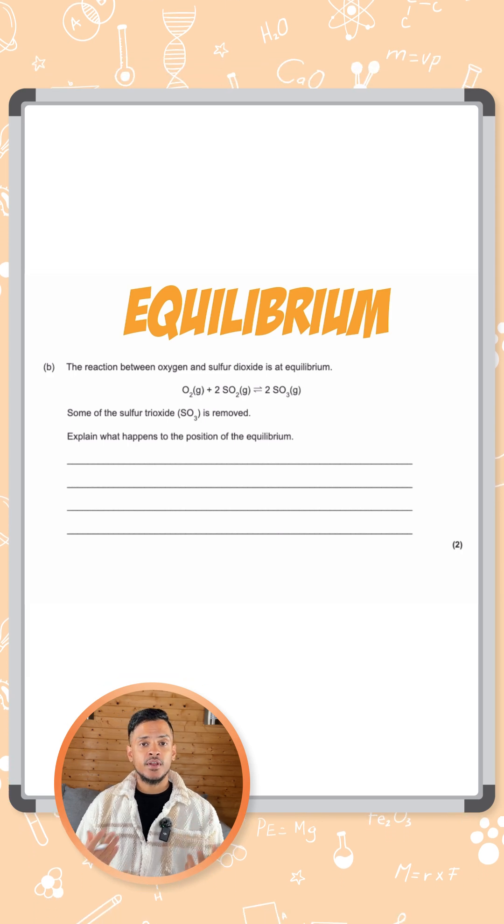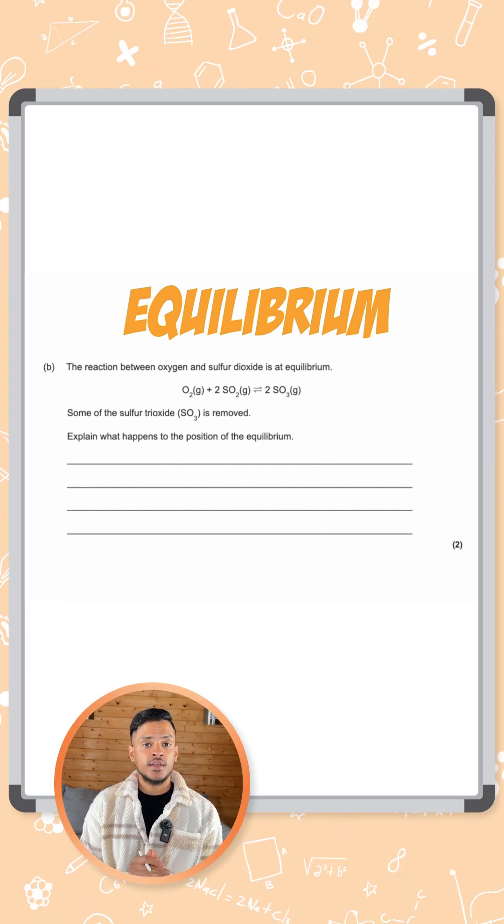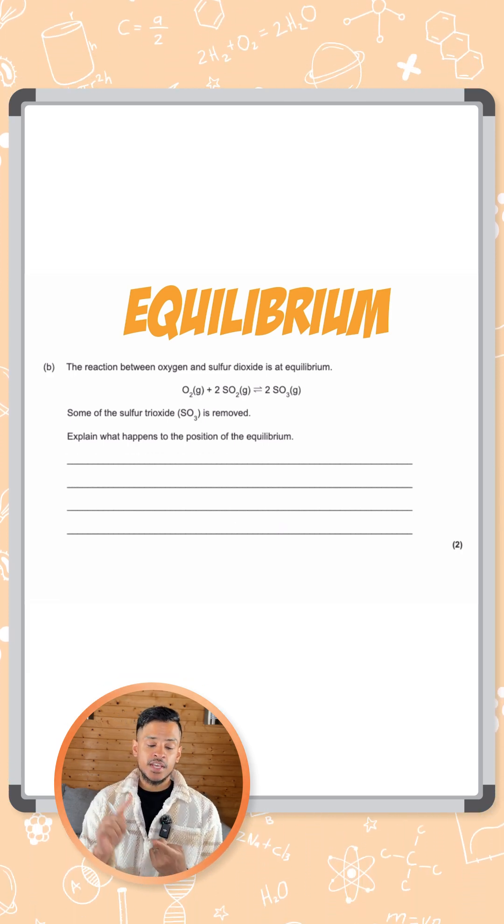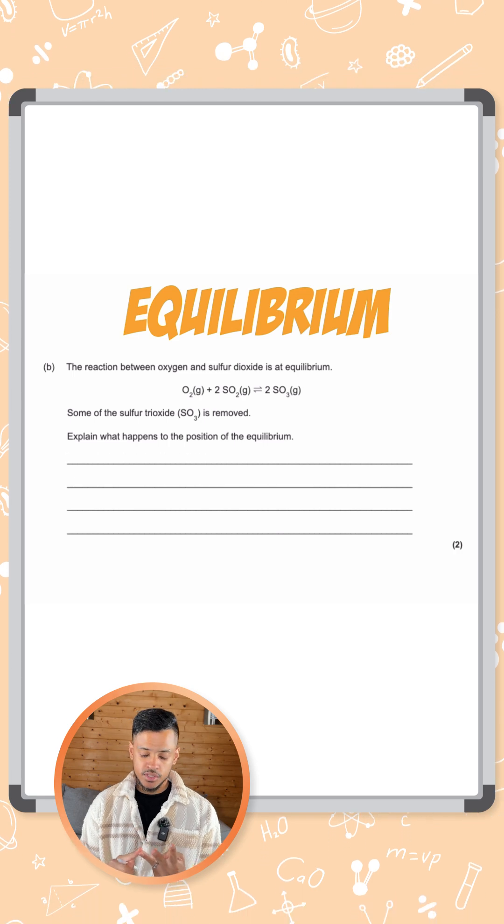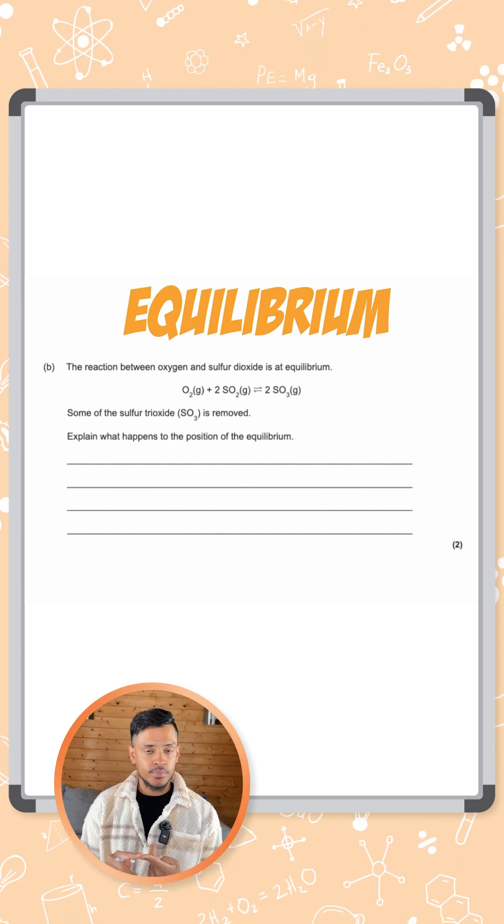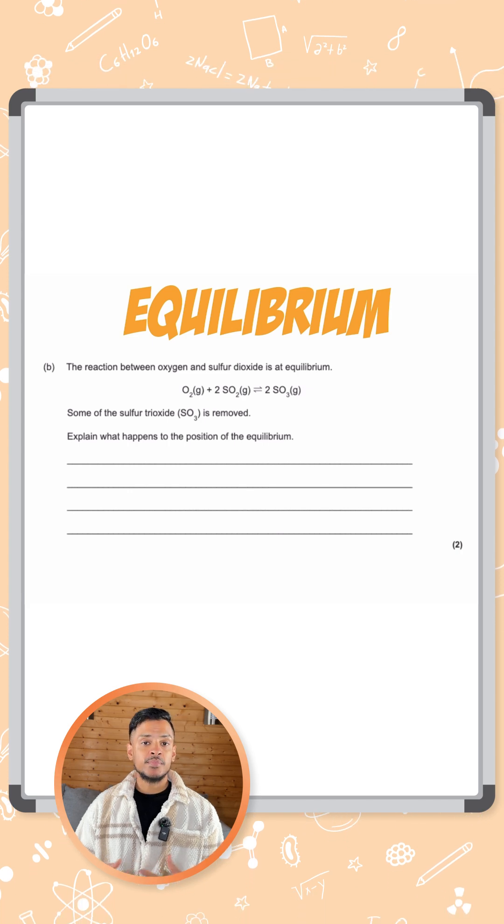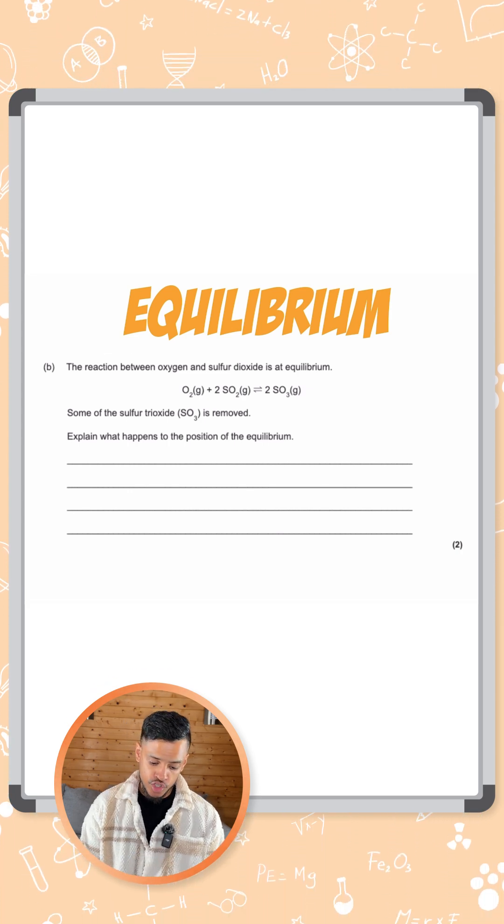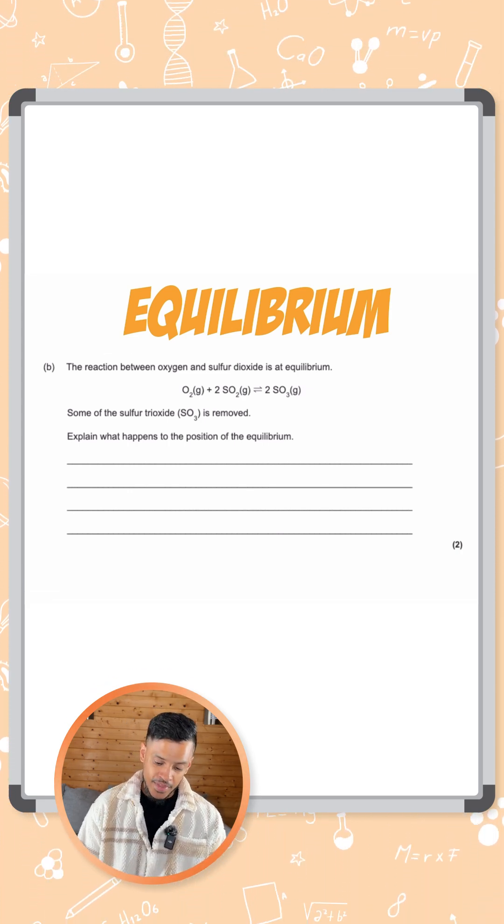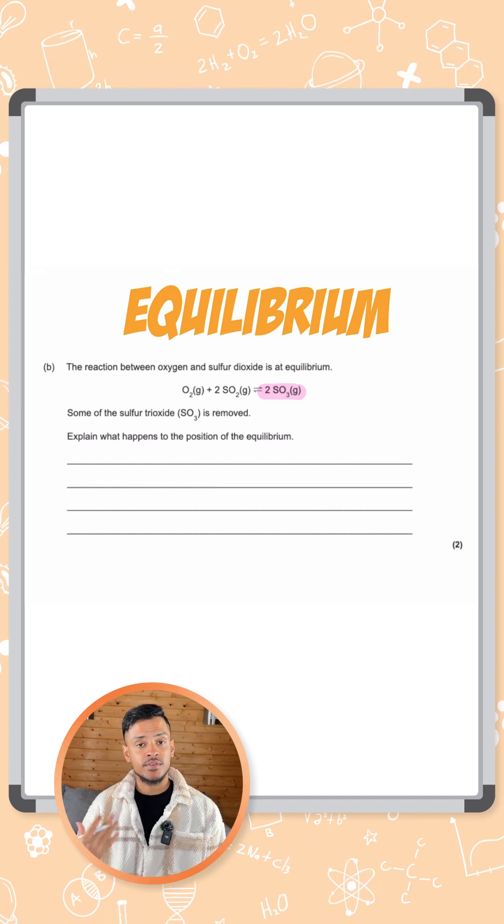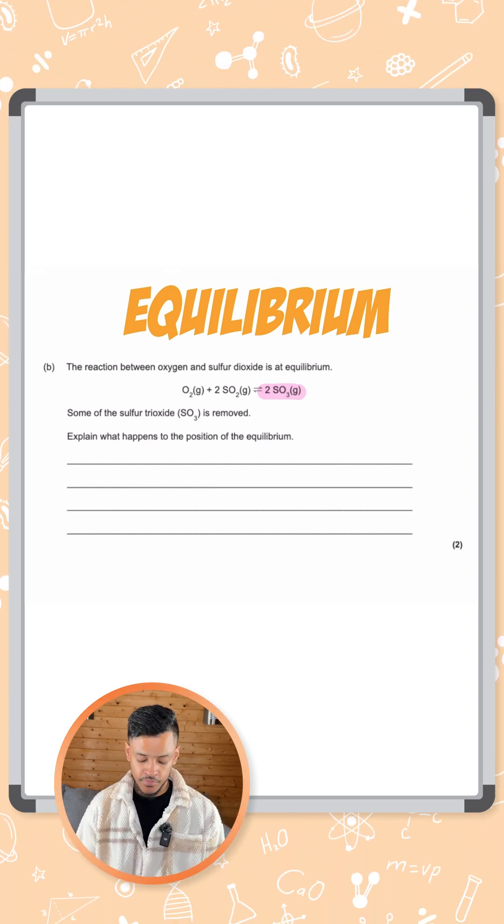There's three factors that you learn about when it comes to shifting the position of equilibrium: temperature, pressure, and concentration. This question is not about temperature or pressure. It's about some of the sulfur trioxide being removed, so you're basically reducing the concentration of the SO3.